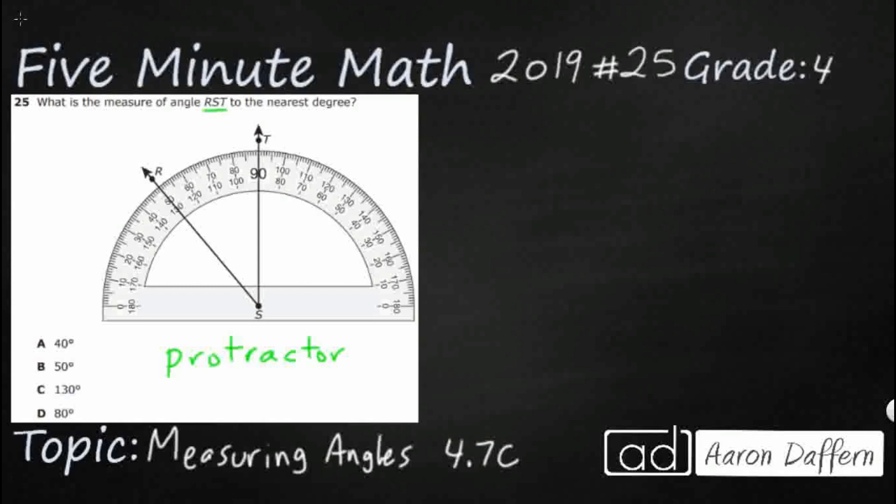Now they label it like this because we see that we've got three different letters here: R, S, T. And whenever we see those three angles, those three letters in order, that's going to give us our angle and it's this central letter that's going to give us our vertex.